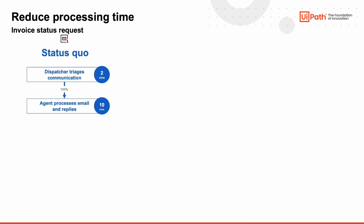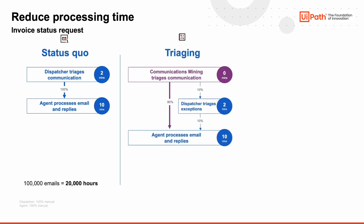Let's turn these examples into numbers and see how this impacts processing time. If we take a typical volume of 100,000 emails annually, with several FTE dedicated to suppliers, we see that the invoice status request emails take about 20,000 hours. In a second scenario, we can already achieve a material impact by having communications mining handle the majority of our triaging. There may still be exceptions, and a dispatcher can take care of those.